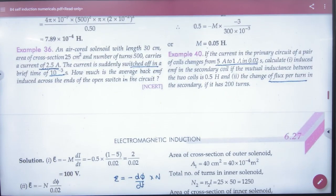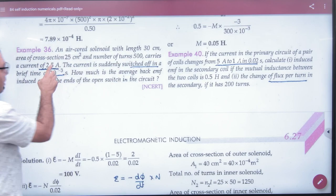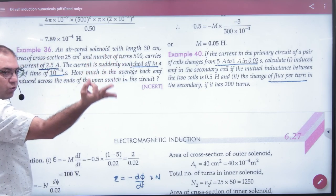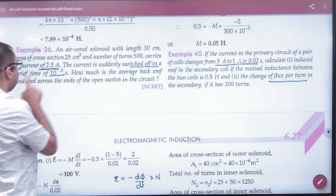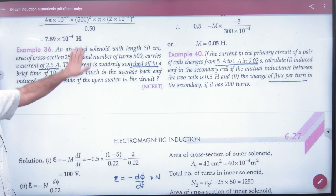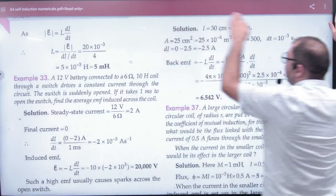Next. Example 36: Air core solenoid with length given, area given, number of turns given, current given. Current suddenly switched off - made zero. In this much time. Average back EMF induced across the switch. Back EMF means induced EMF. The inductor's induced EMF or back EMF. The problem is that L is not given. L dimensions are given. First what to do? L unknown. Area known, number of turns known.